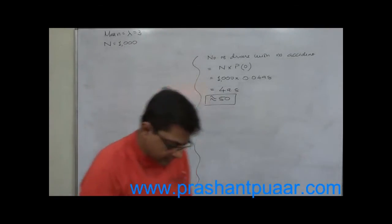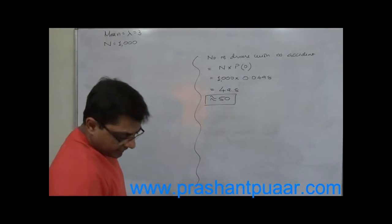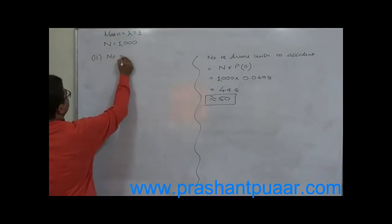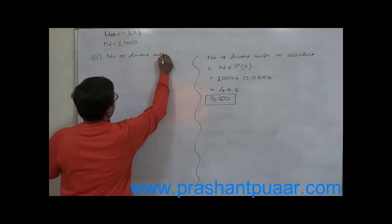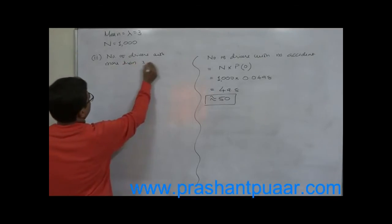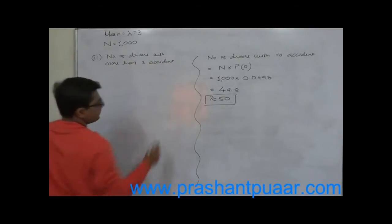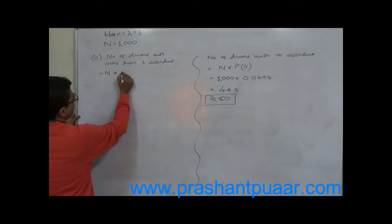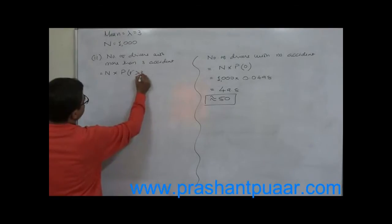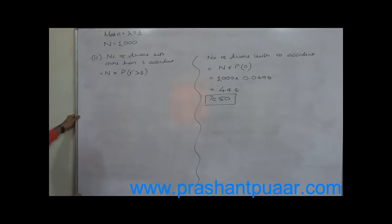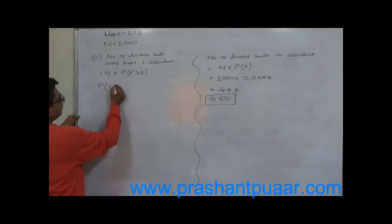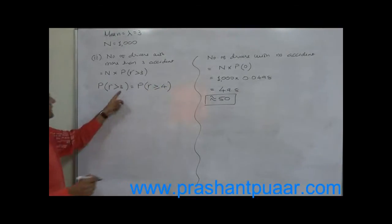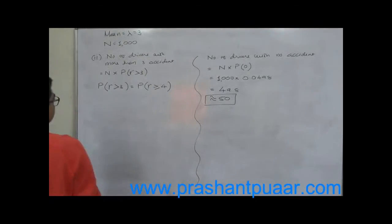The second case we need to calculate is the number of drivers with more than 3 accidents. The important thing is 'more than 3.' For this purpose we find N multiplied by the probability of r greater than 3. Now, probability of r greater than 3 means probability of r greater than or equal to 4, because more than 3 starts from 4.